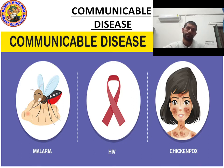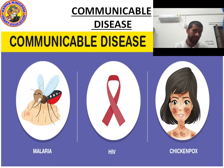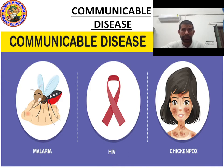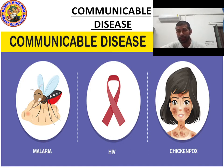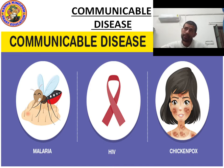Malaria disease occurs due to the bite of a female mosquito. Remember: due to the male mosquito, malaria does not occur — it occurs only due to the female mosquito. The name of that mosquito is Anopheles — A-N-O-P-H-E-L-E-S. When the Anopheles mosquito bites you, you suffer from malaria disease.